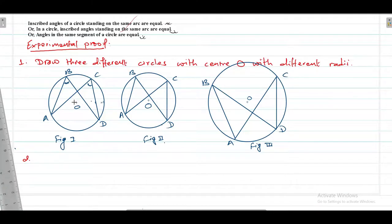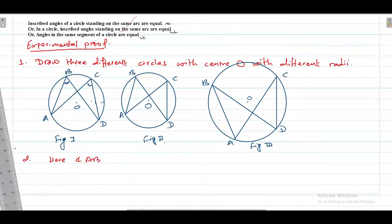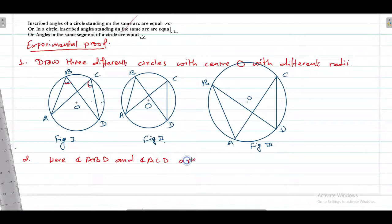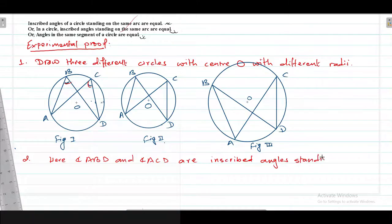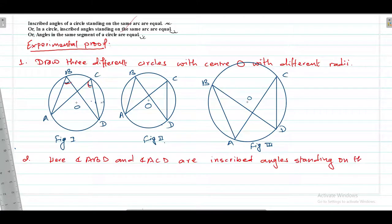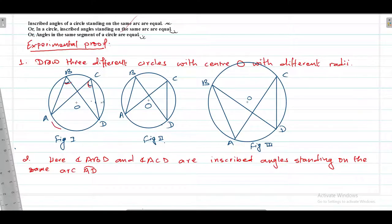Now in step number two we have to describe each figure. Here angle ABD and angle ACD are inscribed angles standing on the same arc AD. This arc is the arc AD.